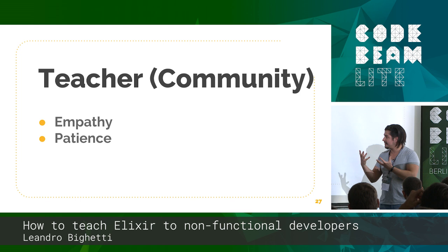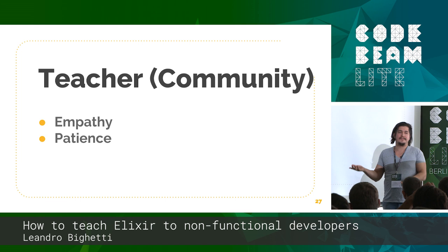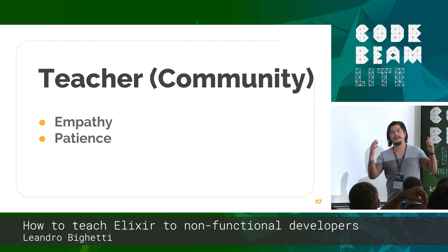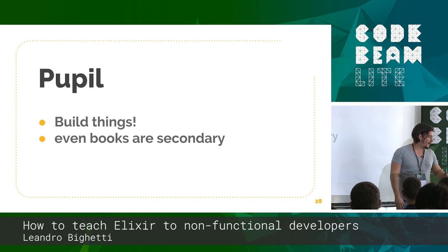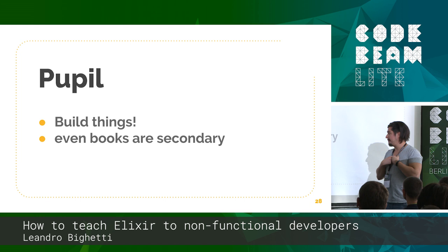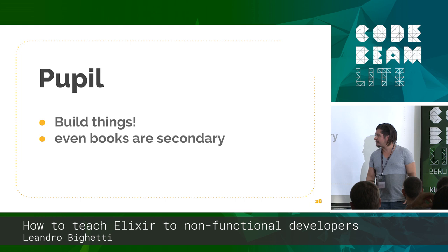Especially if it's the first programming language, first functional programming language, or if it's Elixir. Patience is needed because sometimes they're going to ask things that don't even make sense, and you have to try to understand what the problem is that they're trying to solve — ask for code samples, try to run things. From the part of the pupil, what works best is just building things. You have to code — the only way out is through. You have to program and really have the experience to pass through this.